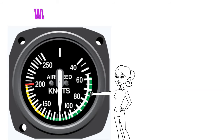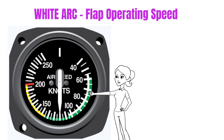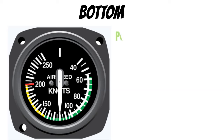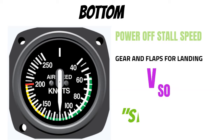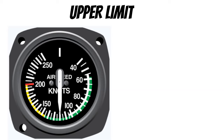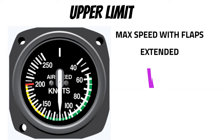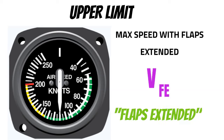The white arc is our flap operating speed range. At the bottom of the white arc, we have power-off stall speed in the landing configuration — meaning gear and flaps are extended. This V-speed is VS0. You can remember this by 'stall with stuff out.' At the upper limit of the white arc, we have the maximum speed with flaps extended. On this particular airplane, that's 105 knots. This V-speed is VFE — flaps extended. If you fly above this airspeed with flaps extended, you could damage the flaps.